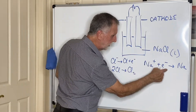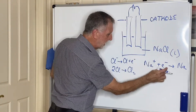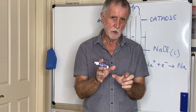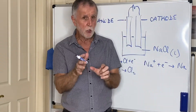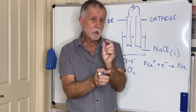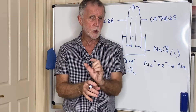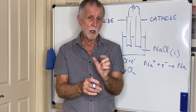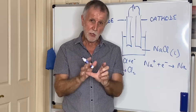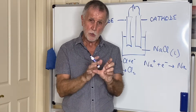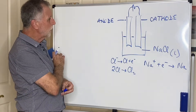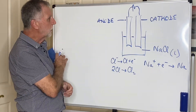At the cathode, reduction is still taking place, electrons are gained. So even though the sign of the electrodes change when you go from a galvanic cell to an electrolytic, the definitions of anode and cathode never change. By definition, the anode is always where oxidation takes place, and the cathode is always where reduction takes place. So that's for a molten compound.